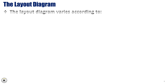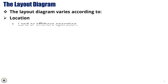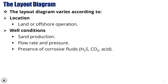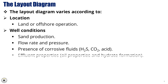The layout diagram varies according to location — land or offshore operation — and well conditions, including sand production, flow rate and pressure, presence of corrosive fluids such as H2S, CO2, and acid, as well as effluent properties, oil properties, and hydrate formation.